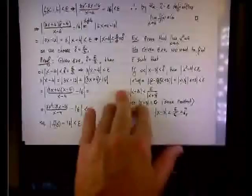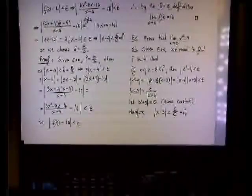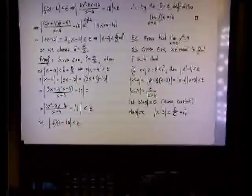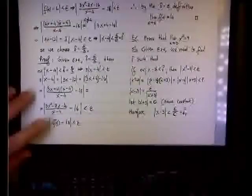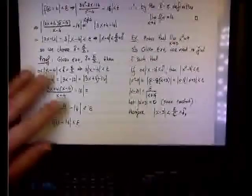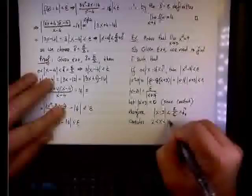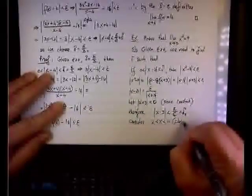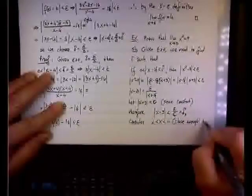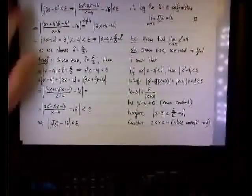That's pretty safe. I could finesse it more — say x is between 2.9 and 3.1 — but that gives inconvenient numbers. So I'll keep whole numbers and consider x to be between 2 and 4, since that's close enough to 3. Remember, x approaches 3, and I need c in order to come up with a delta.